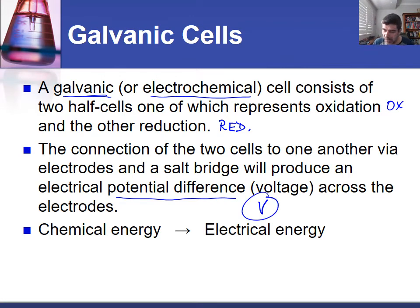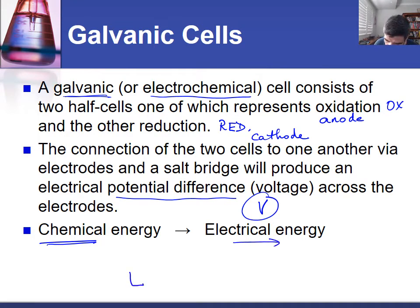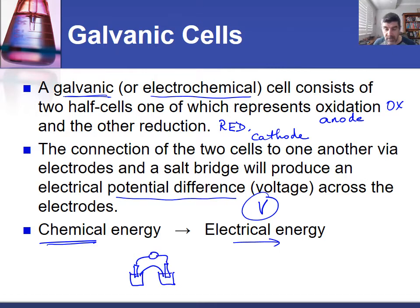One of those electrodes where the oxidation is occurring will be the anode, and the other will be the cathode, where reduction is occurring. In a galvanic cell we take chemical energy and use it to produce electrical energy. In the simplest situation we just have our salt bridge, our two electrodes, and our power supply running between these two, with each electrode in its own solution.